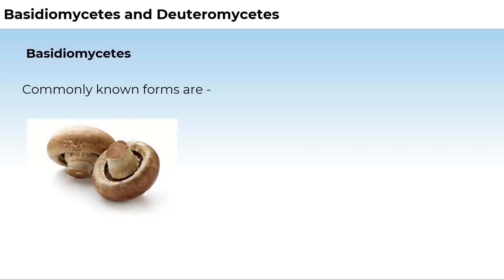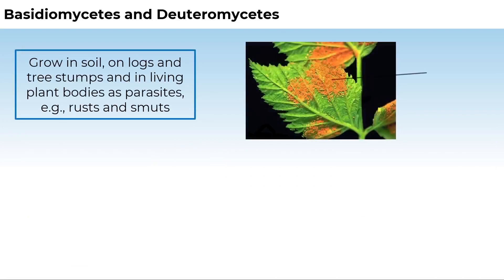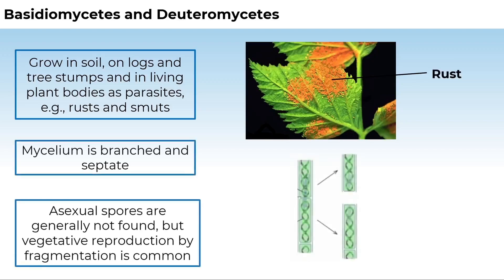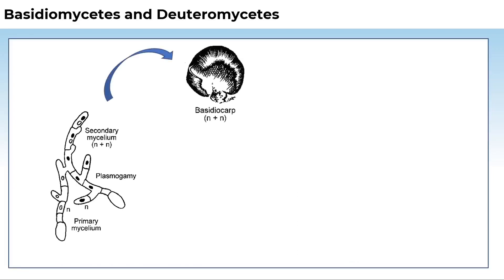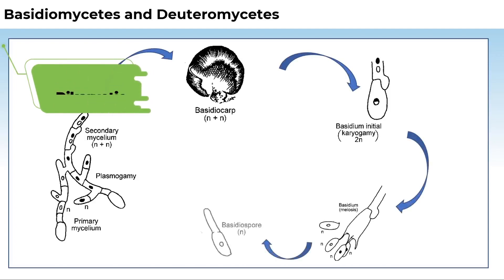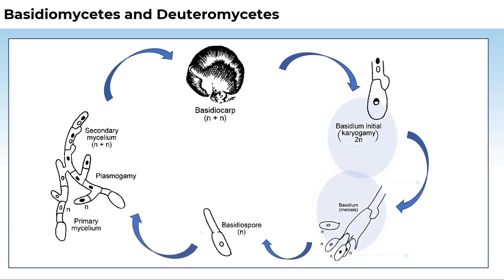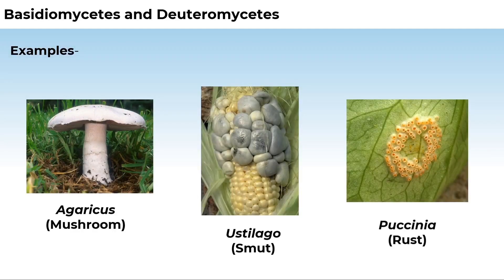Commonly known forms of Basidiomycetes are mushrooms, bracket fungi, or puffballs. They grow in soil, on logs and tree stumps, and in living plant bodies as parasites, for example rusts and smuts. The mycelium is branched and septate. Asexual spores are generally not found, but vegetative reproduction by fragmentation is common. Sex organs are absent, but plasmogamy is brought about by fusion of two vegetative or somatic cells of different strains. The resultant dikaryotic structure ultimately gives rise to a basidium, where karyogamy and meiosis produce four basidiospores. The basidia are arranged in fruiting bodies called basidiocarps. Common members are Agaricus (mushroom), Ustilago (smut), and Puccinia (rust fungus).